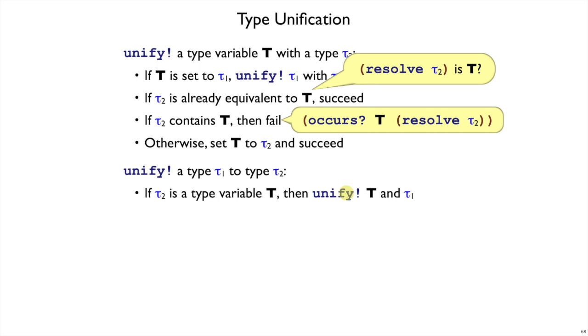So what's left to consider is the case where tau1 and tau2 are not type variables. If they are both num or they are both bool, then that's consistent, and unify should succeed. It doesn't change any type variables, it's just happy that both of those types are consistent.